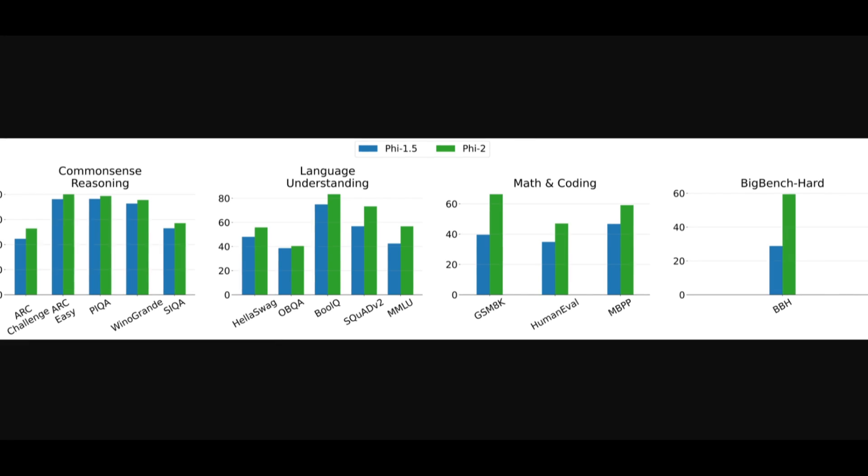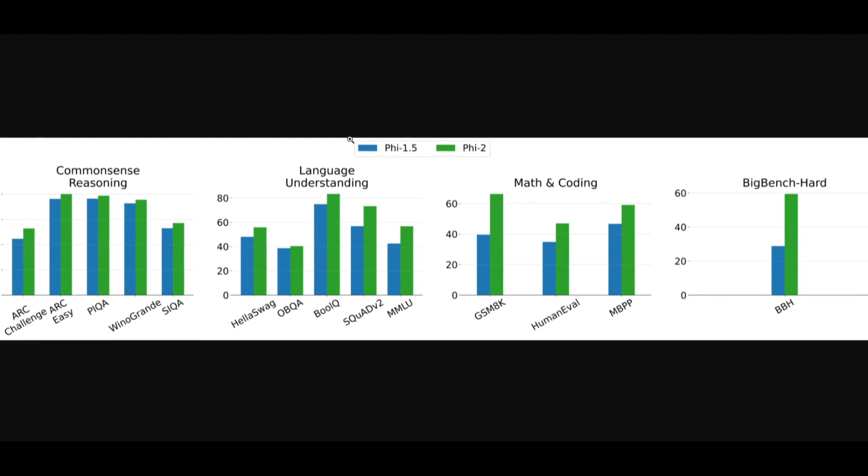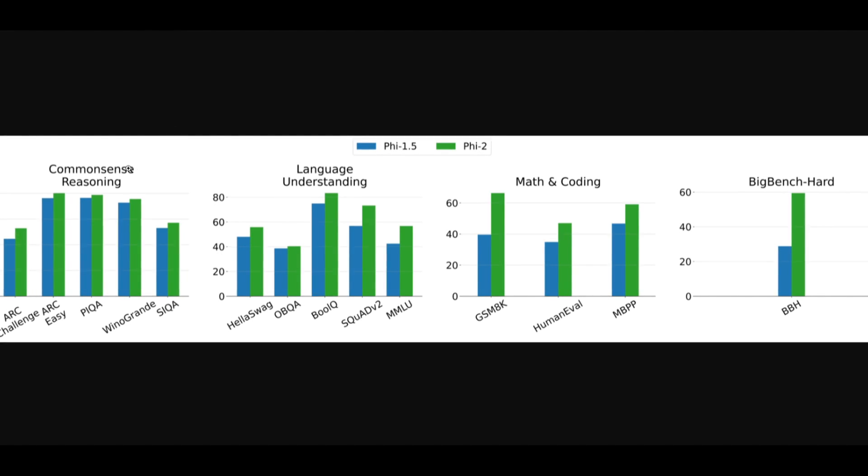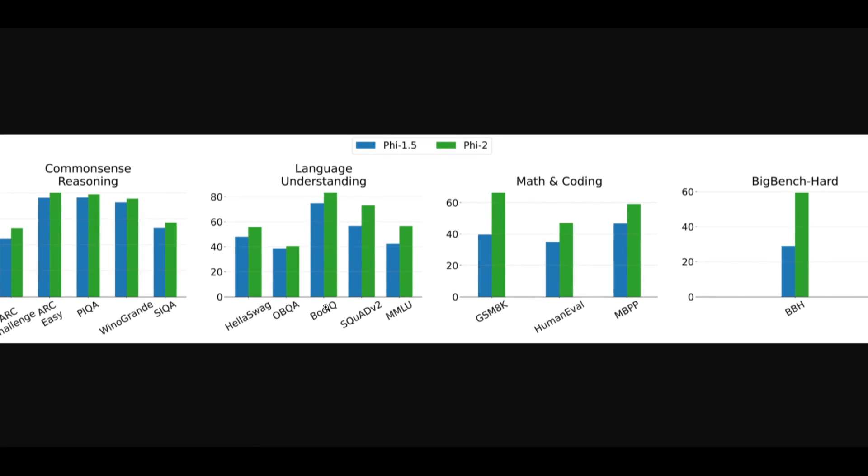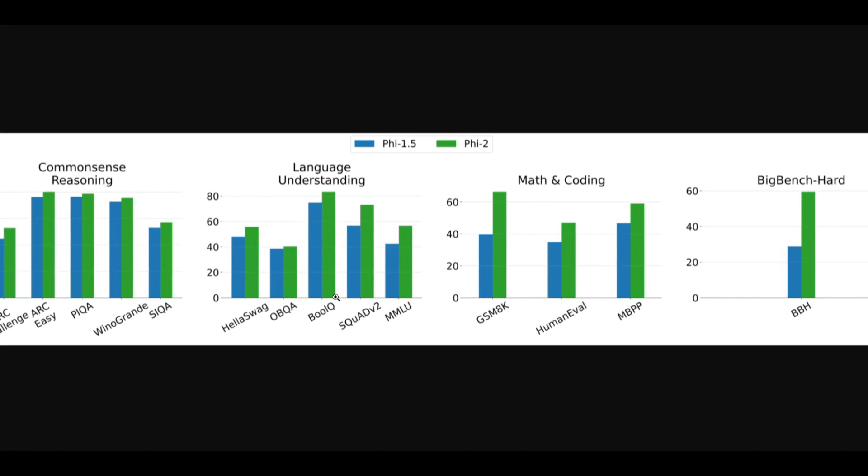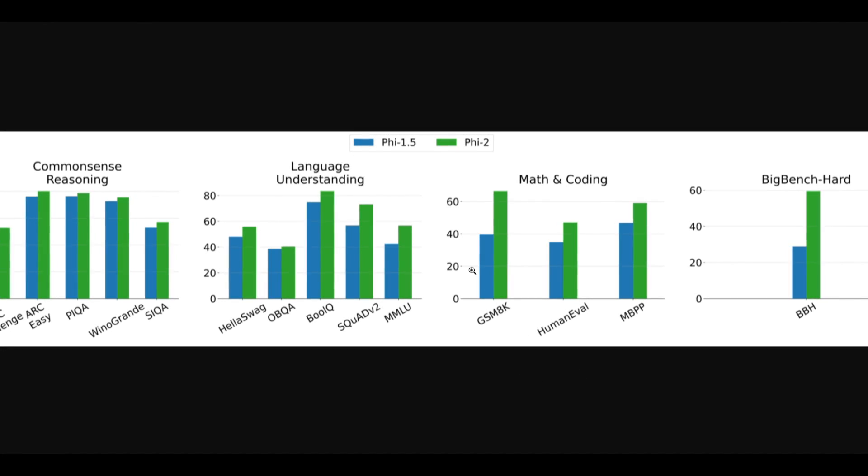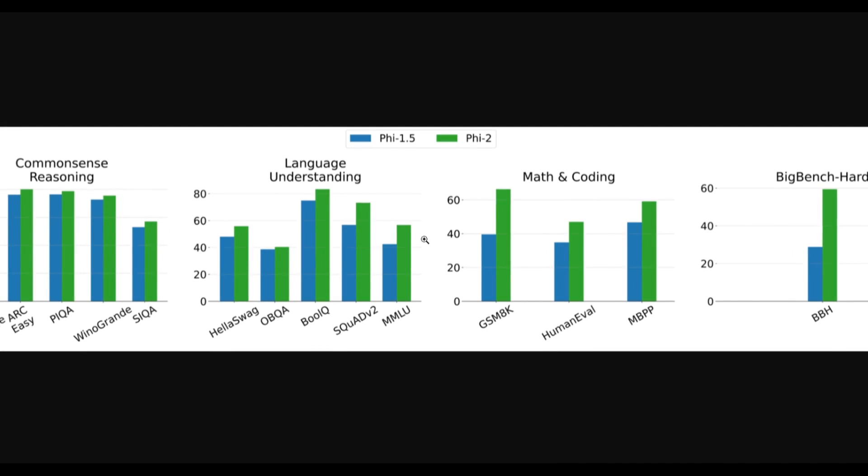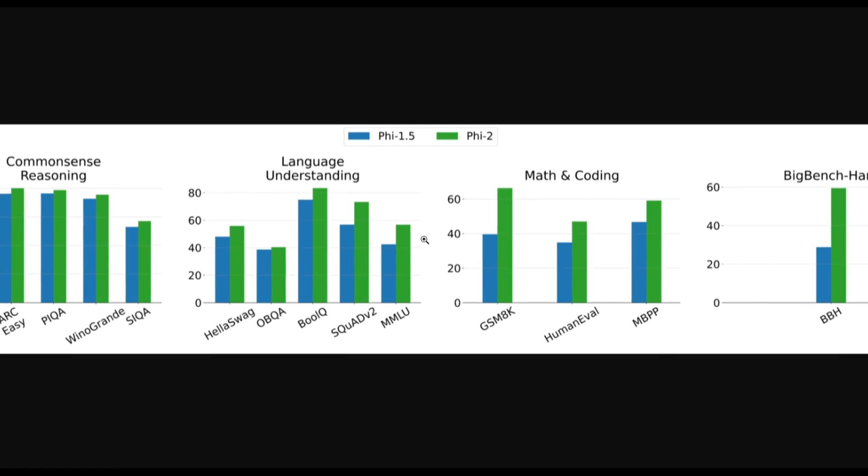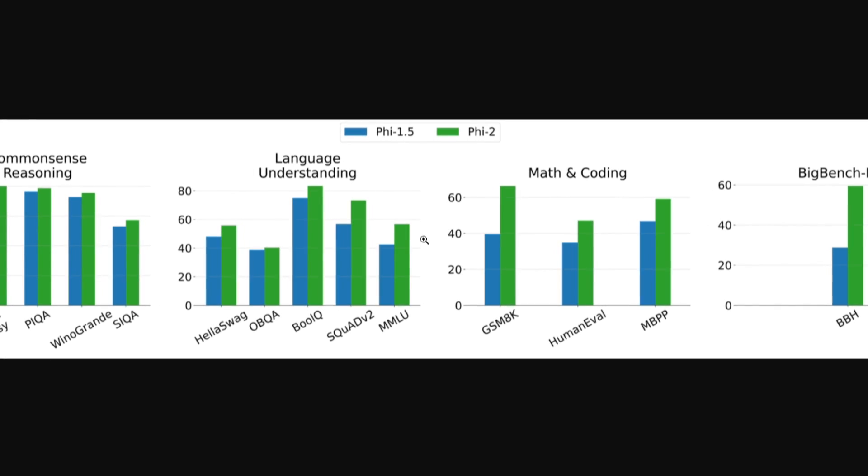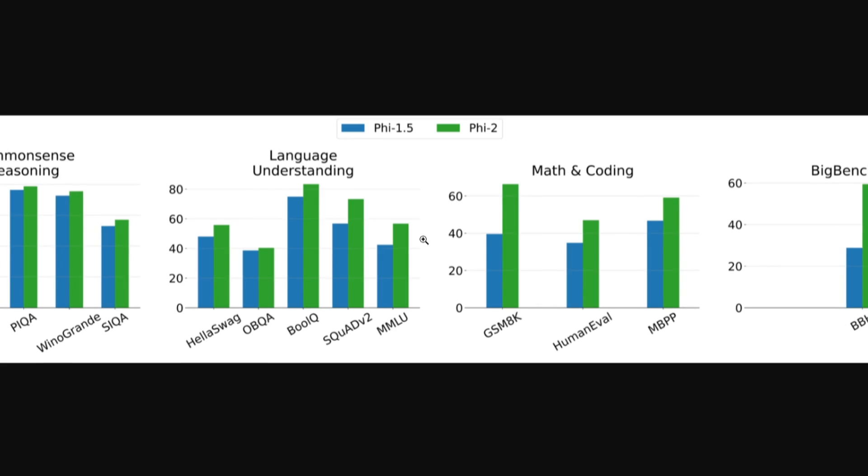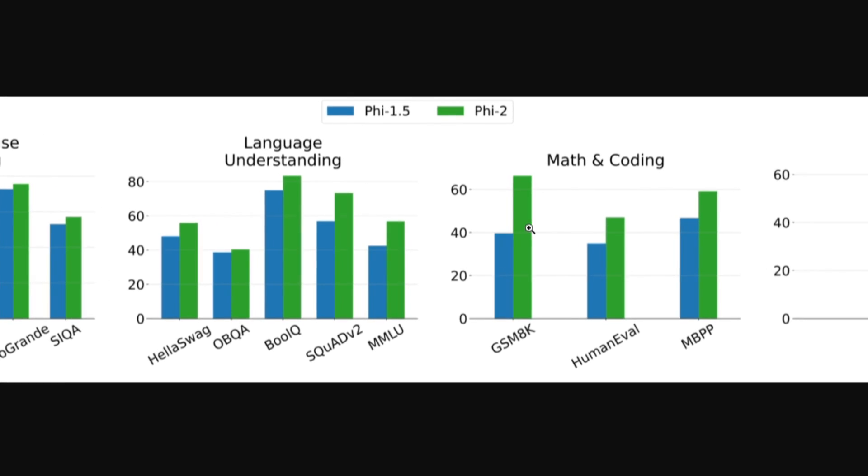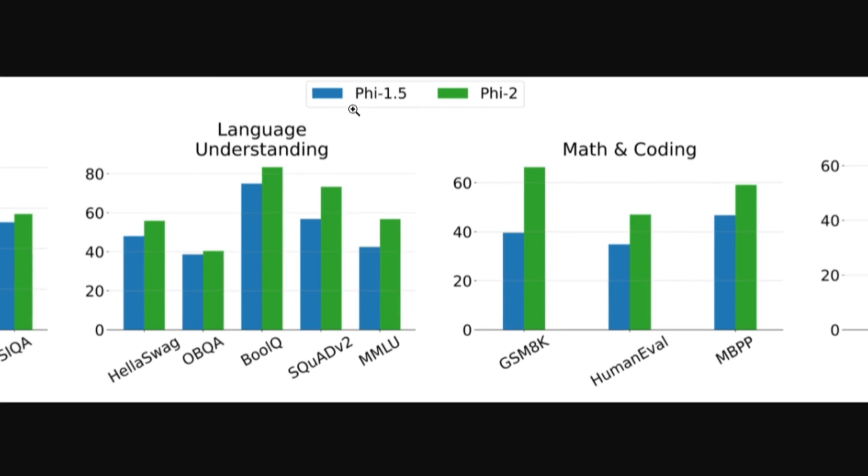We can see this in the comparison image comparing the Phi-1.5 model to the Phi-2 model. It illustrates the performance on various benchmarks, scaling from 1.3 billion parameters to the new 2.7. The performance increased across different categories from reasoning to language understanding, as well as math and coding. The Phi-2 model outperforms on every single benchmark in comparison to Phi-1.5.